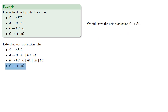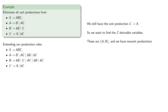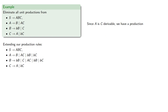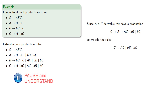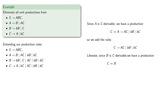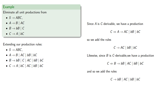We still have the unit production C produces A, so we find the C derivable variables, which are A and B, and we have the non-unit productions. Since A is C derivable, C eventually produces A, which could go to any one of these, so we add them as rules. Likewise, since B is C derivable, we have C eventually producing B, which then produces one of these, and so we add these rules as well, although in point of fact they're already there.